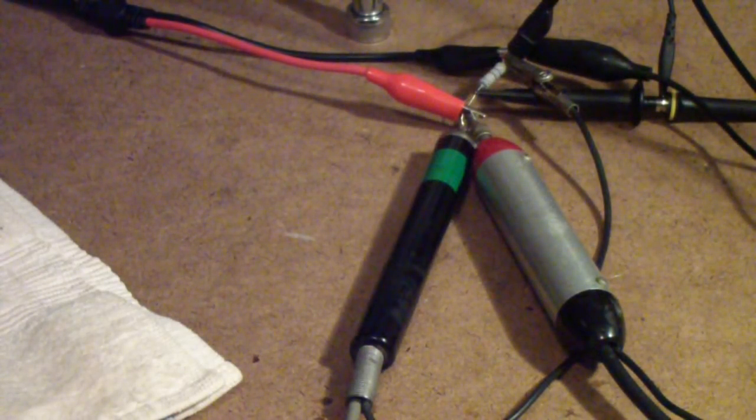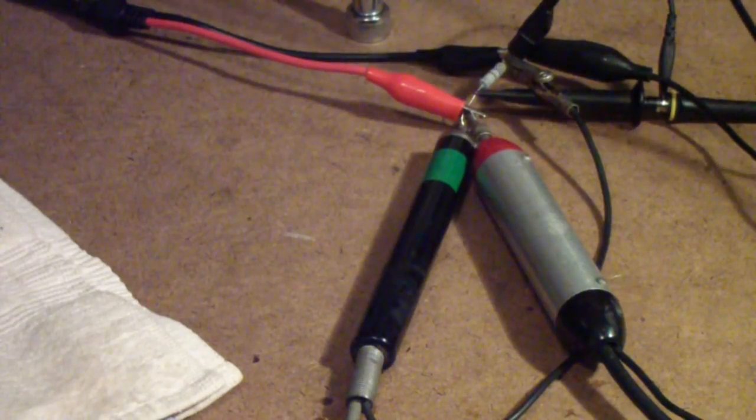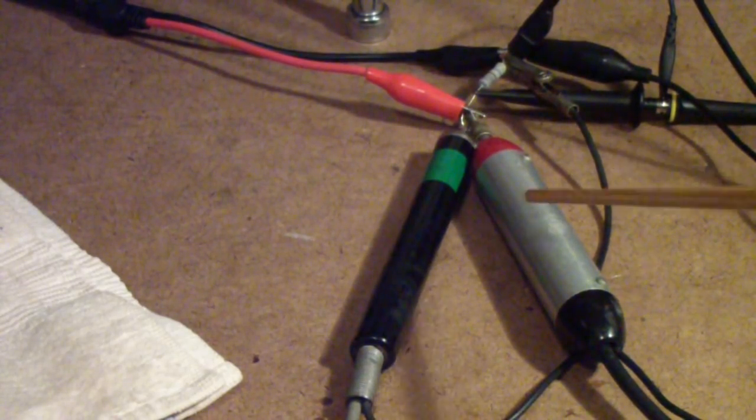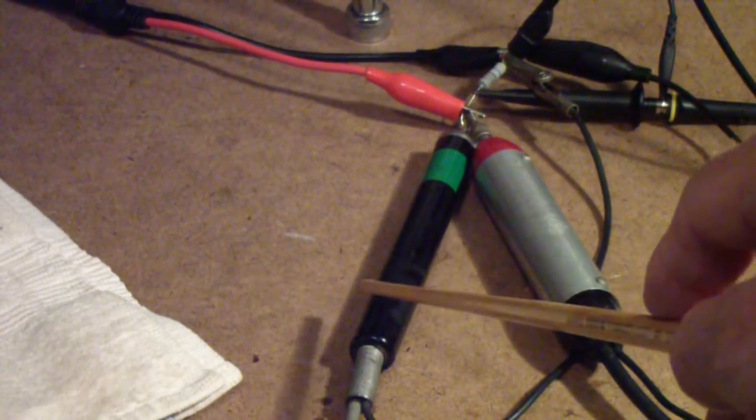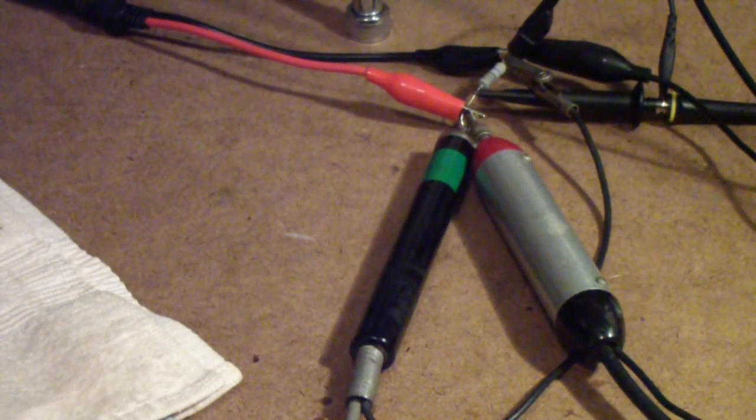In a previous video I talked about demodulator probes and I extolled the virtues of the one on the right there, the one with the metal covering, and at the time I said this was an ICO probe. It's not. I found out it's actually a Heath probe or Heathkit. The one on the left is an ICO probe, and I'll show you the schematics in a little bit, but what I wanted to show you is the difference in the performance between these two.